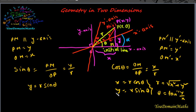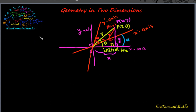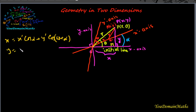We know that the relation between oblique and rectangular axes from the previous lecture: x = x' cos α + y' cos(ω + α) and y = x' sin α + y' sin(ω + α), where α is the angle between the x' axis and the x-axis.